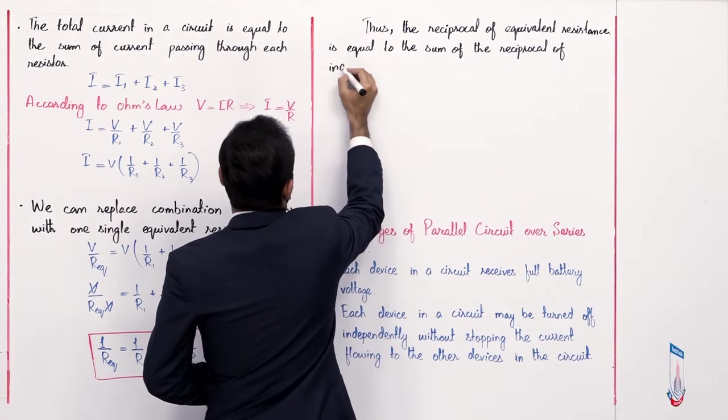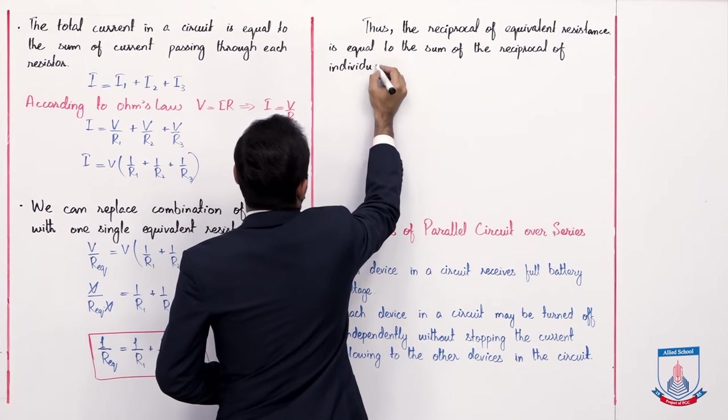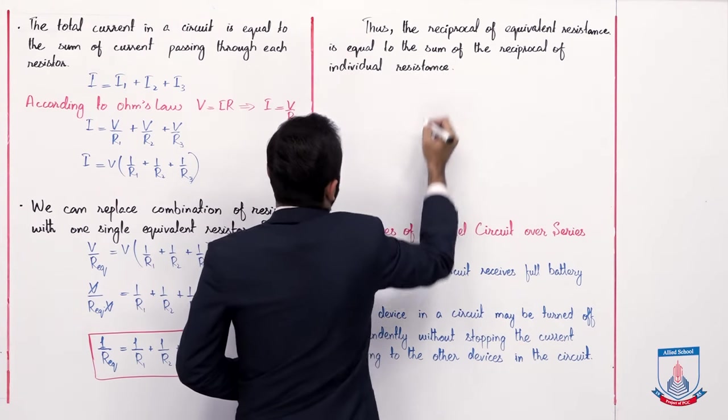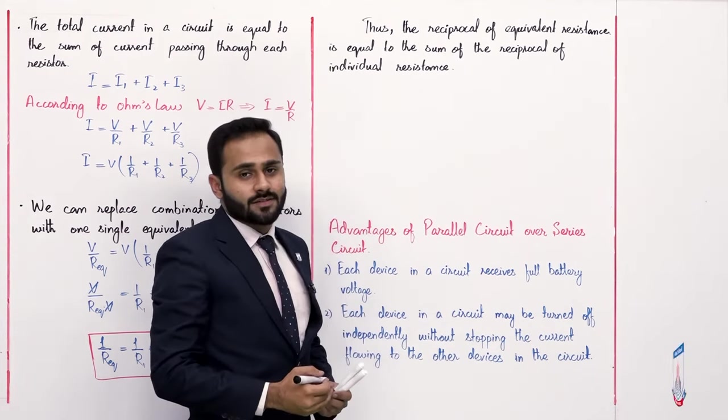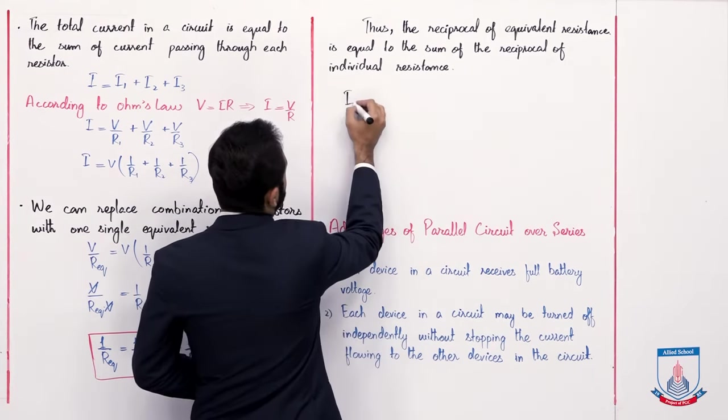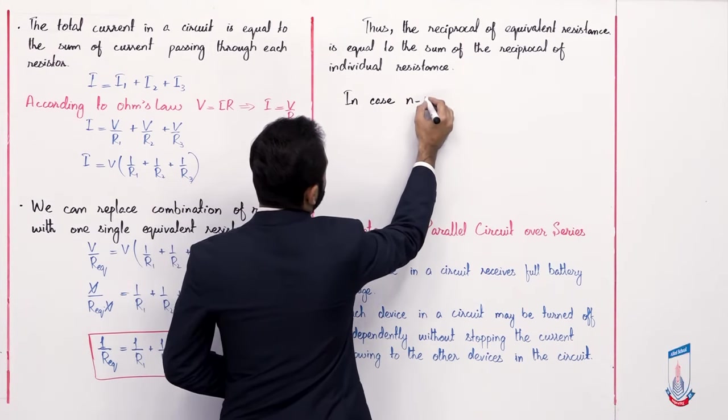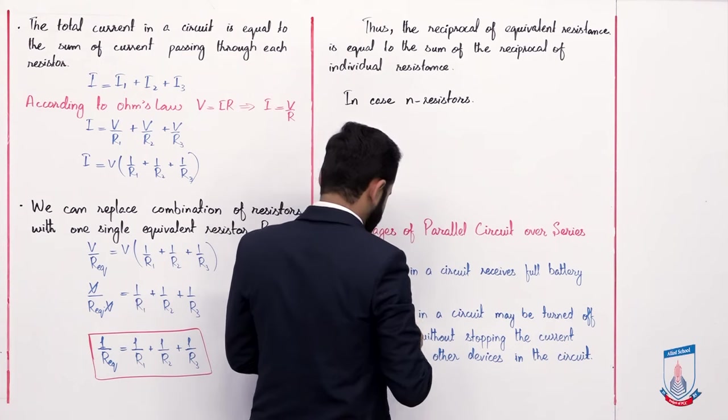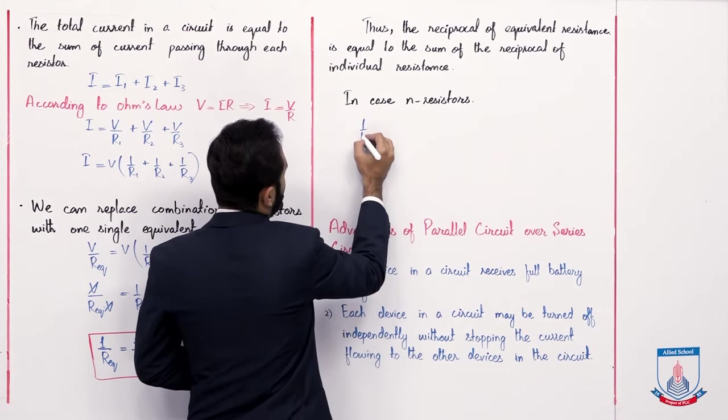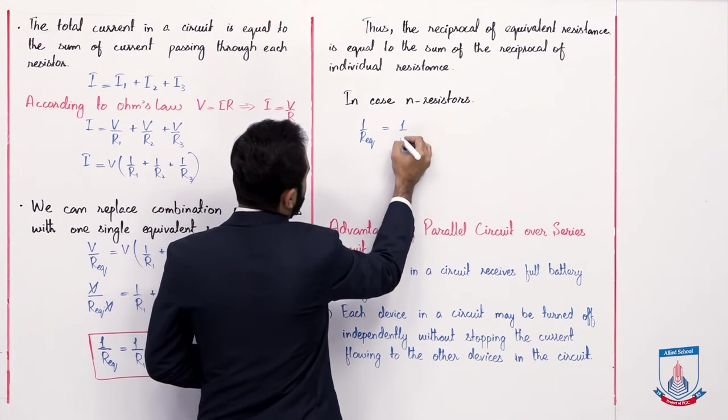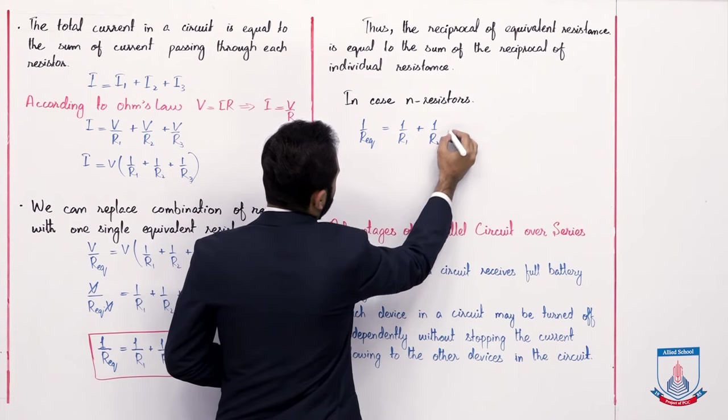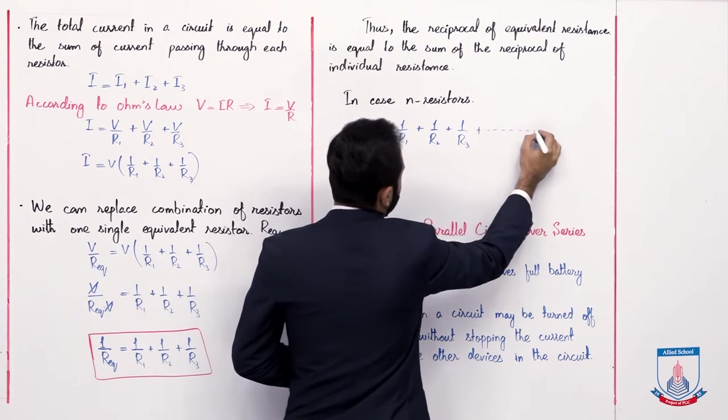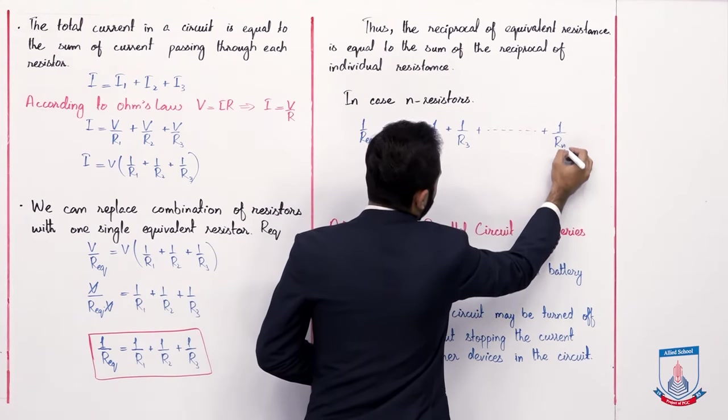Now in case of n resistors, if n resistors are attached, then we will add up those resistors. In case of n resistors, 1 over R equivalent is equal to 1 over R1 plus 1 over R2 plus 1 over R3 and so on, 1 over Rn.